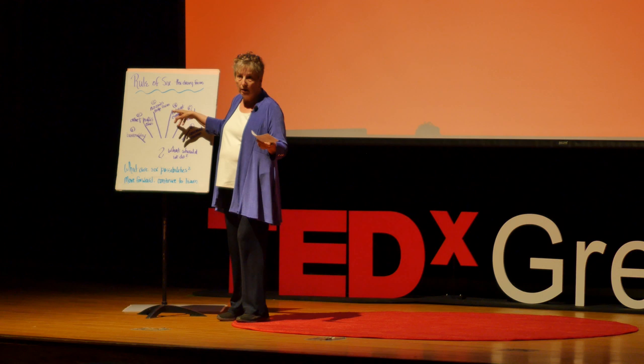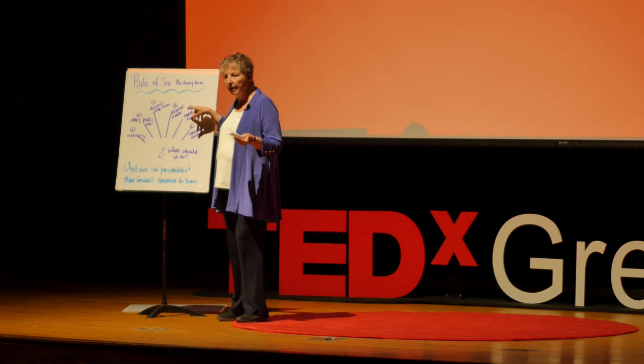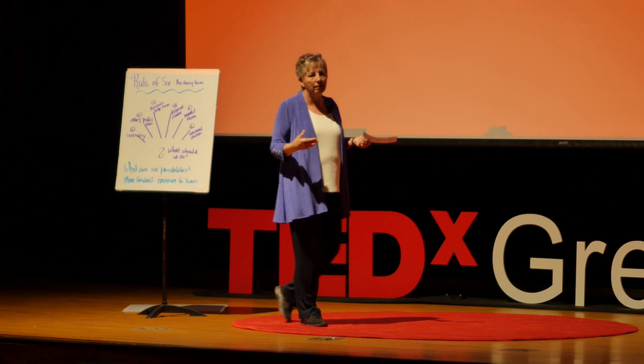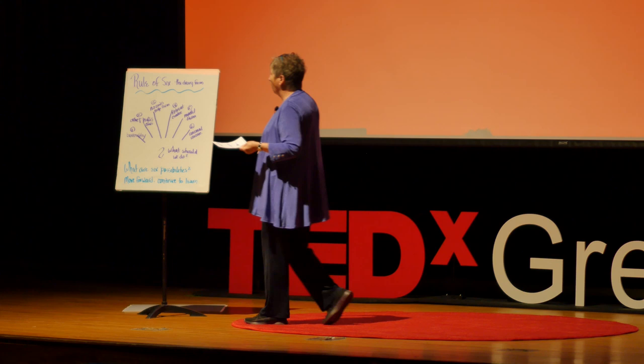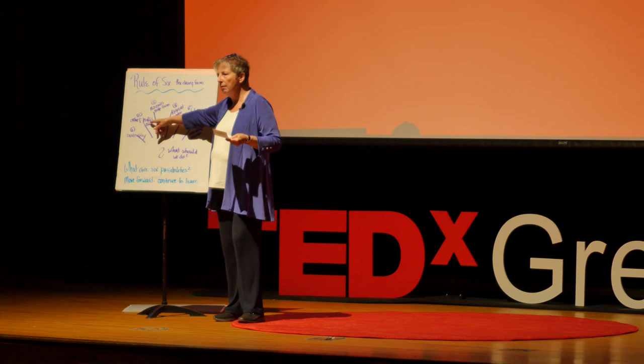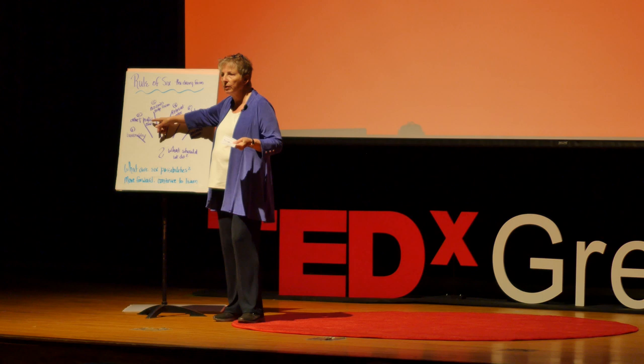The fourth option was run it as a retreat center — do programs in the barn. The fifth was run it as a model farm, like a university extension farm. And the sixth was, because my stepson Ethan loves animals, run it as an animal rescue center. I was running the numbers on that and they were negative. The question was: what should we do?